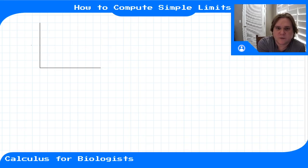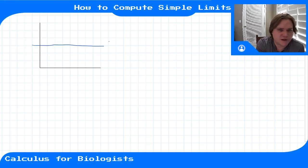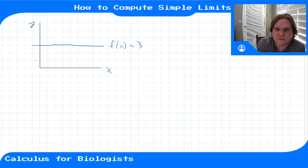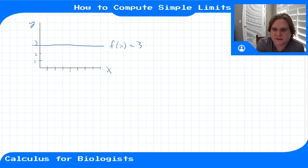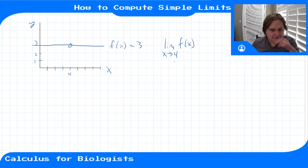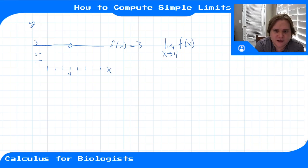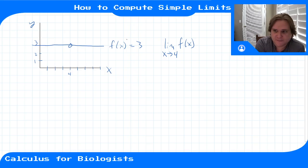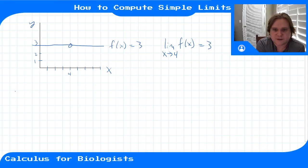Let's say we had a constant function — this is supposed to be a straight line. So this function f(x) equals some constant, let's say three — it's always three. If we want to compute the limit at, say, four, we want to know what is the limit of f(x) as x goes to four. For a constant function, no matter what x value you have, the value is always going to be the same.